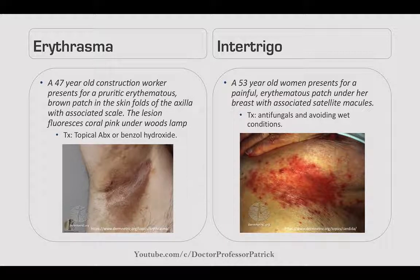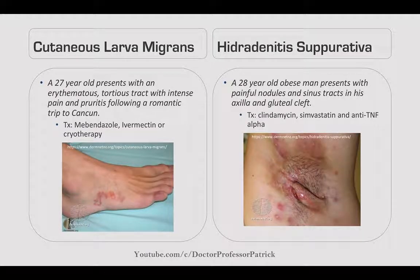Intertrigo: a 53-year-old woman presents with a painful erythematous patch under her breast with satellite macules. This would not fluoresce under a Wood's lamp. Treat with antifungals and avoiding wet conditions. Cutaneous larva migrans: a 27-year-old presents with an erythematous tortuous tract with intense pain and pruritus following a trip to Cancun. Treat with mebendazole, ivermectin, or cryotherapy. Often due to raccoon droppings in sand. Hidradenitis suppurativa (HS): a 28-year-old obese man presents with painful nodules and sinus tracts in the axilla and gluteal cleft. Treat with clindamycin and simvastatin; also trial anti-TNF alpha inhibitors.